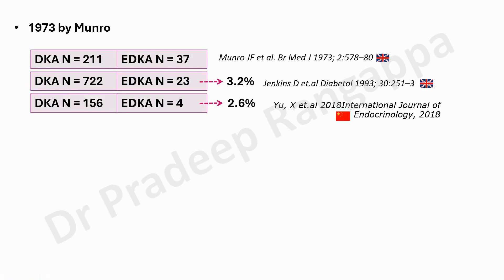We may need to renew our observations as to how the pattern of EDKA is increasing in diabetic patients with the growing usage of SGLT2 inhibitors aimed at reducing cardiovascular risk. This historical data may not be applicable to the current surge in euglycemic diabetic ketoacidosis we are seeing, and we need more data now.